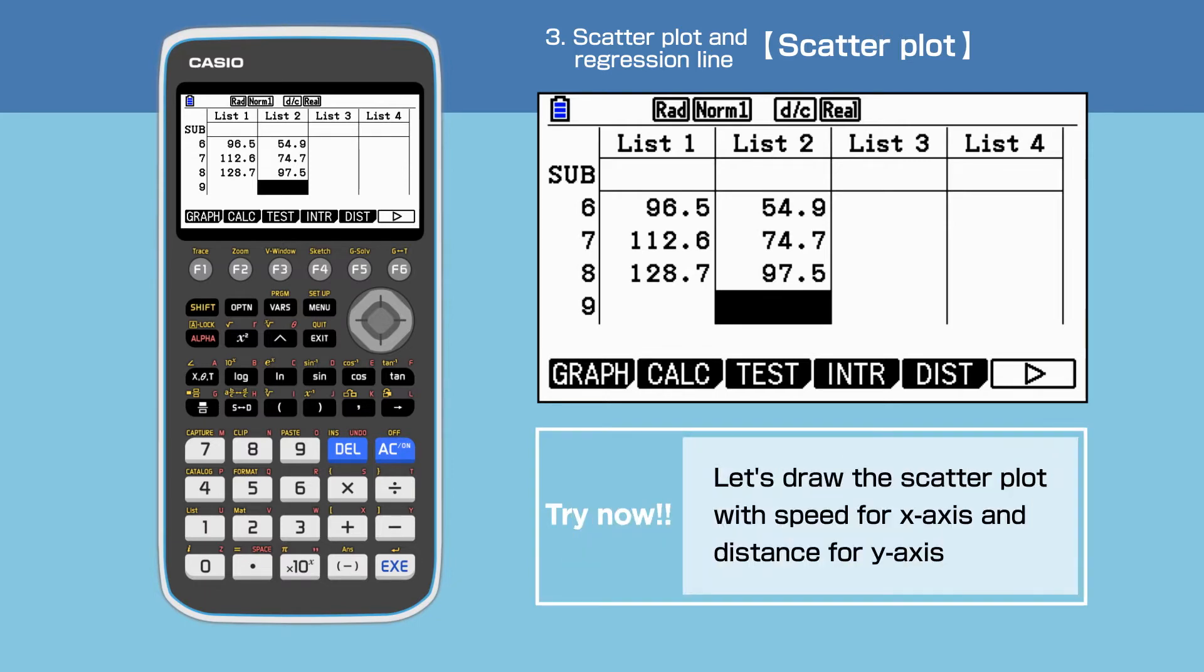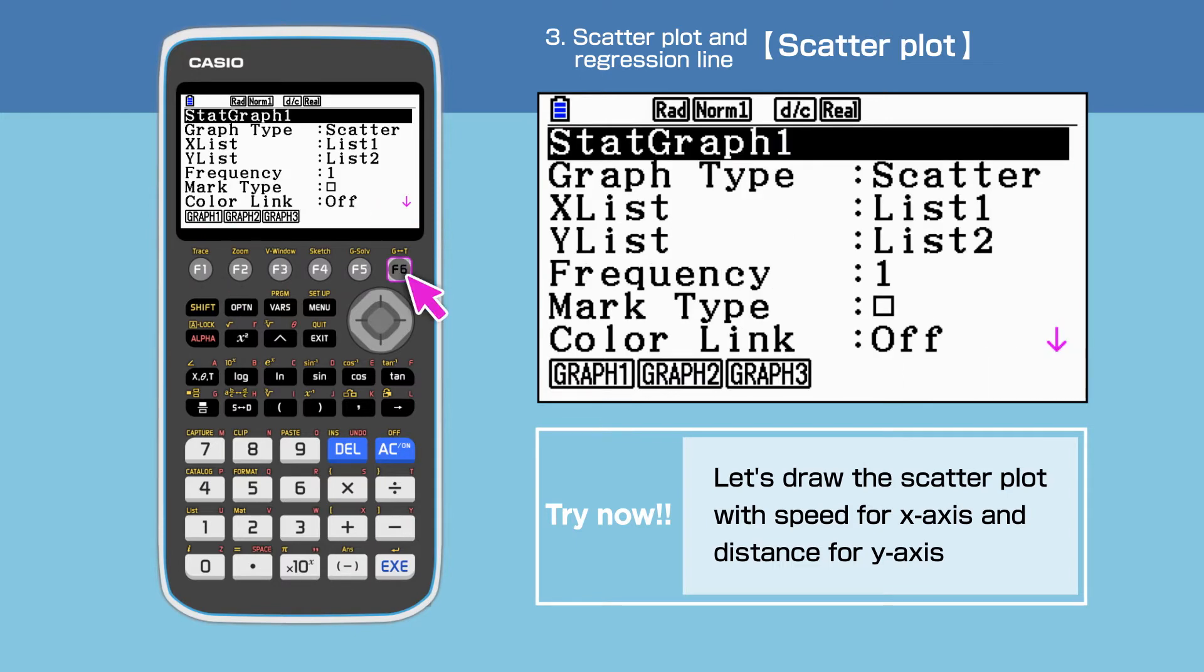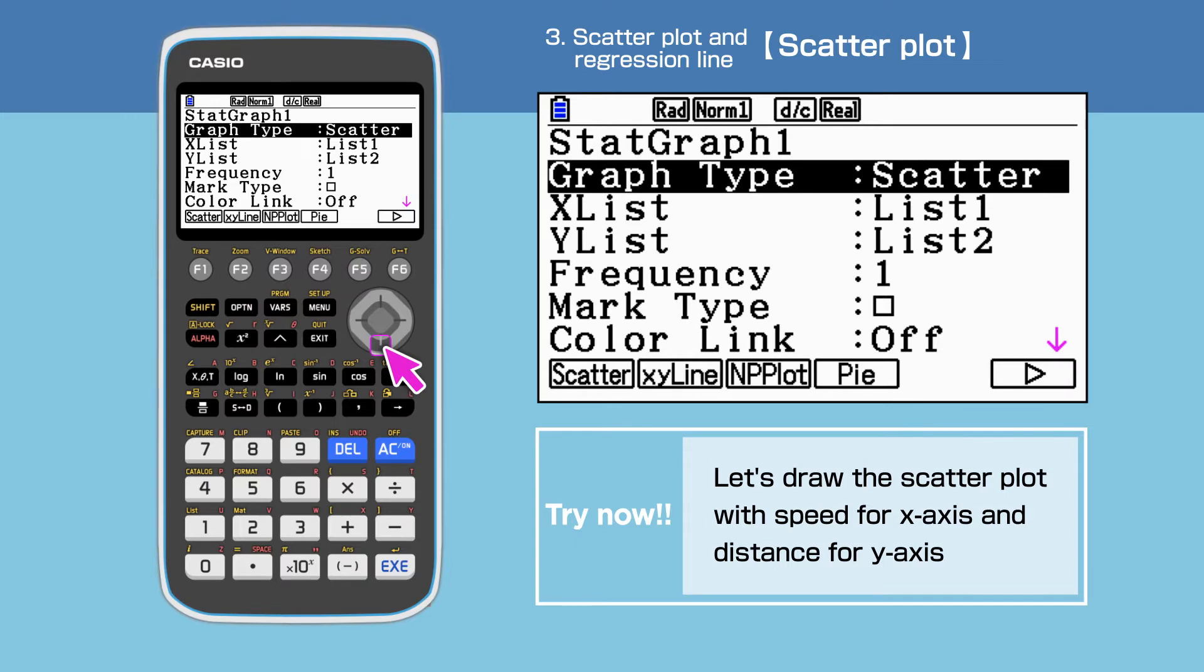We will draw the scatter plot with speed for x-axis and distance for y-axis. Press F1 to select Graph command, then F6 to set up. Press F1 to select Start Graph 1, then choose Graph Type Scatter.